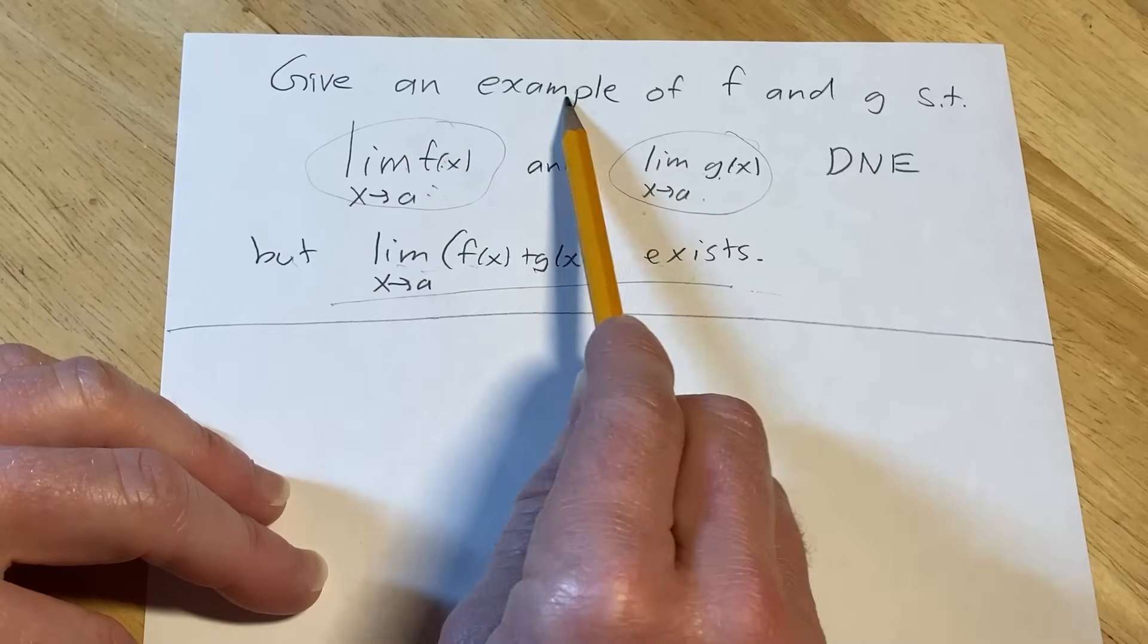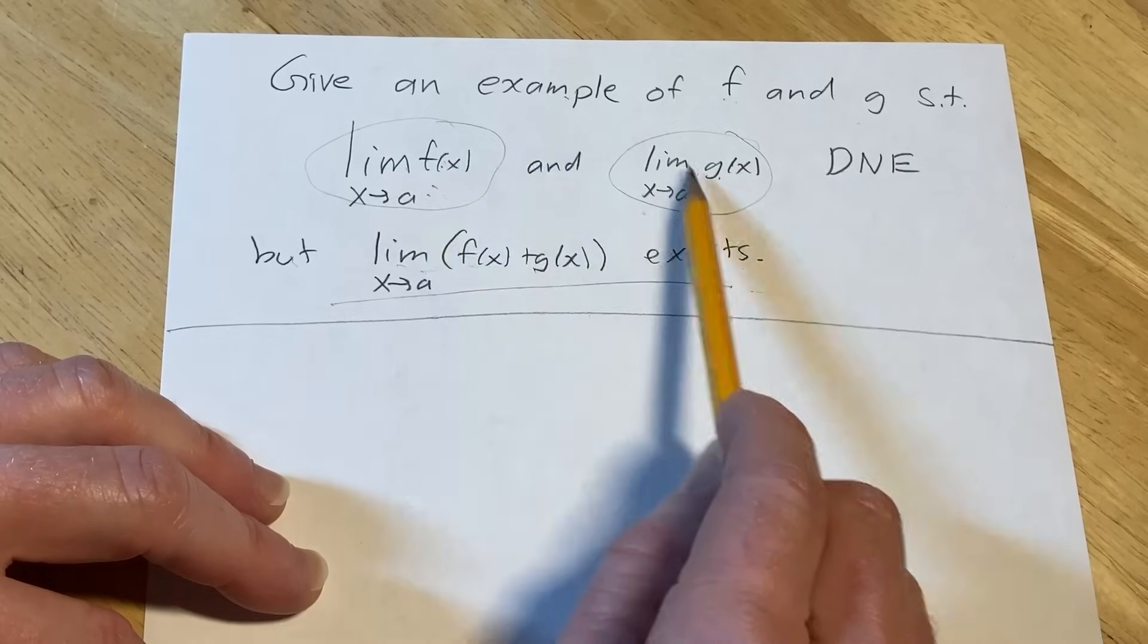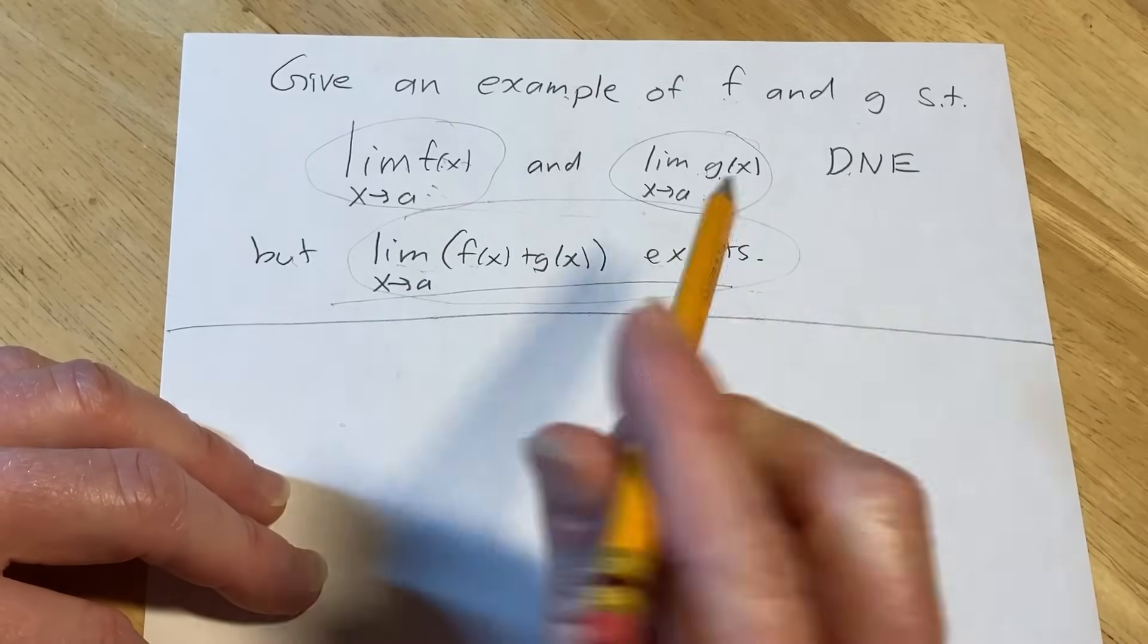Let me first read the problem carefully and then I'm going to explain why it's so important. The question is to give an example of two functions, f and g, such that these limits both do not exist, but the sum actually exists.